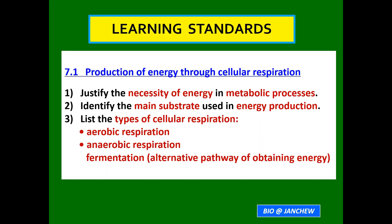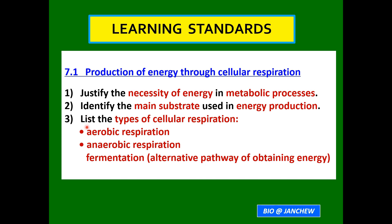The learning standards for today's lesson are as follows — 7.1, Production of Energy Through Cellular Respiration. Number one, we should be able to justify the necessity of energy in metabolic processes. Number two, be able to identify the main substrate used in energy production. Number three, list the types of cellular respiration: aerobic respiration and anaerobic respiration. Apart from that, another alternative pathway is fermentation.